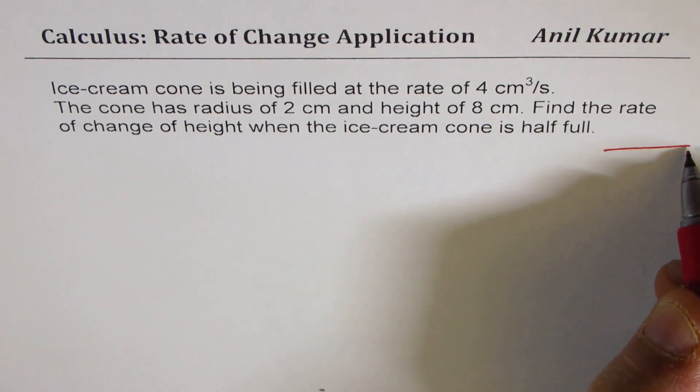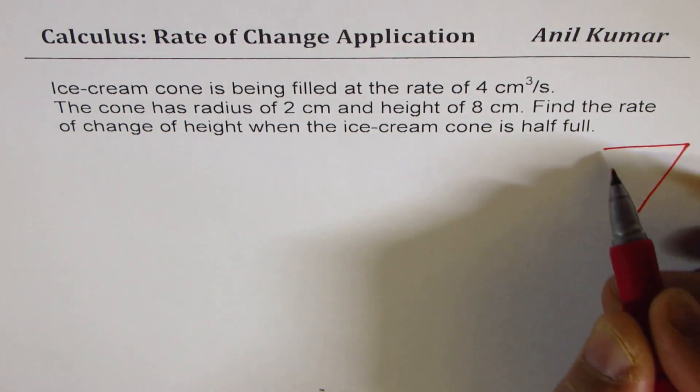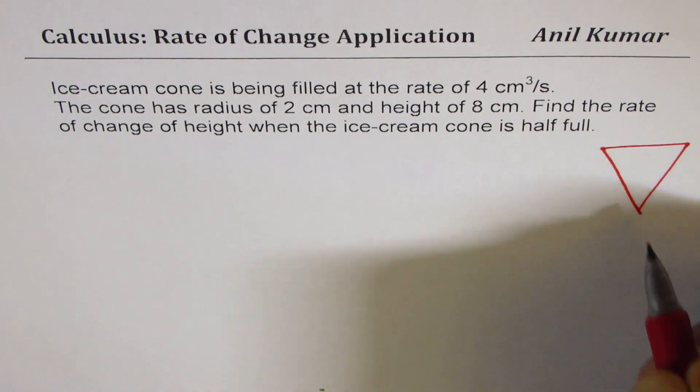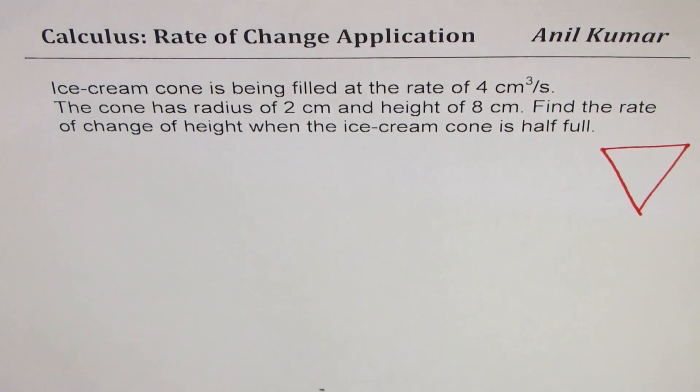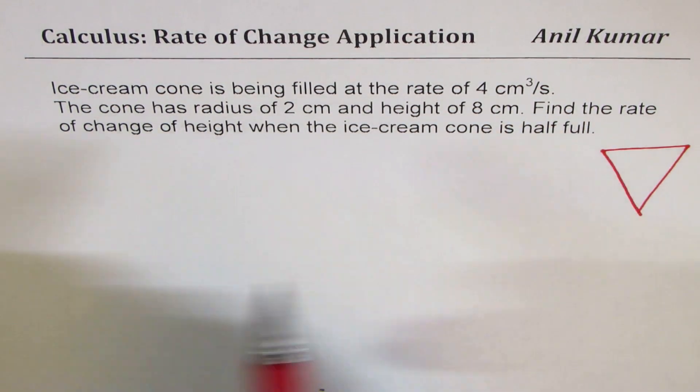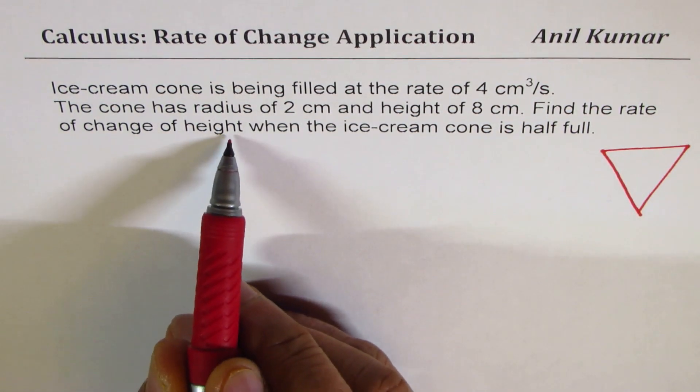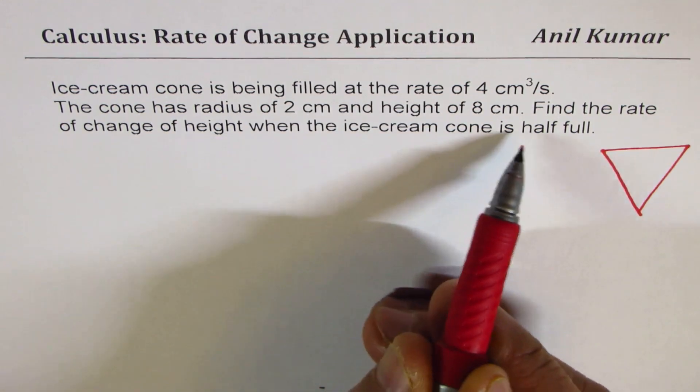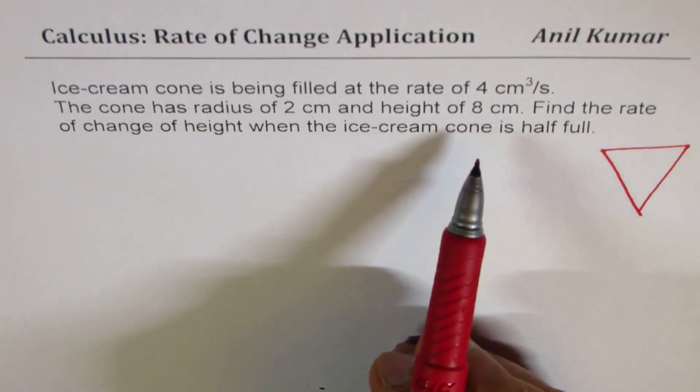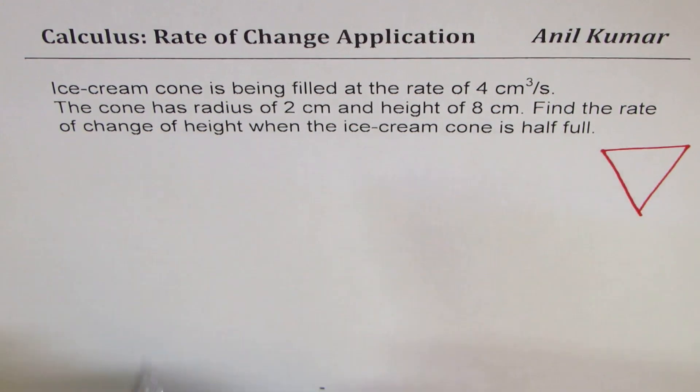So, let's try to find the relation between radius and height of the cone, that is one part. Second part which is kind of important to understand is, it says find the rate of change of height when the ice cream cone is half full. So when the ice cream cone is half full, what is the height?